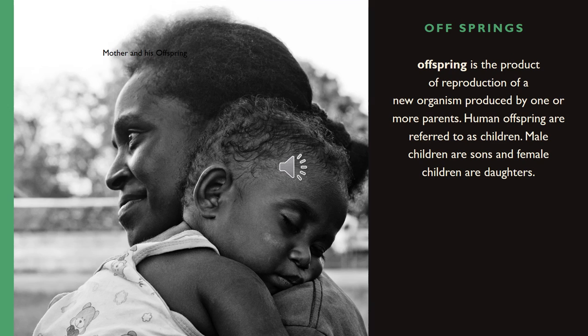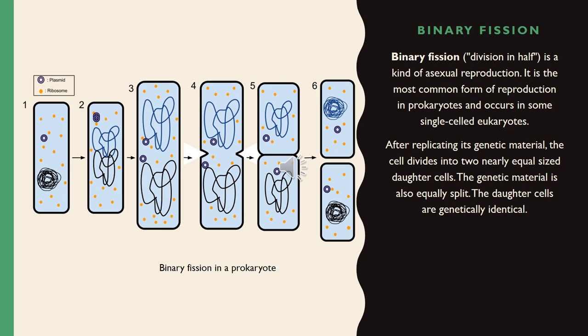Offspring is the product of reproduction — a new organism produced by one or more parents. Human offspring are referred to as children: male children are sons and female children are daughters. Binary fission is a kind of asexual reproduction.